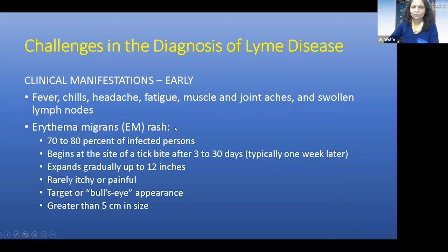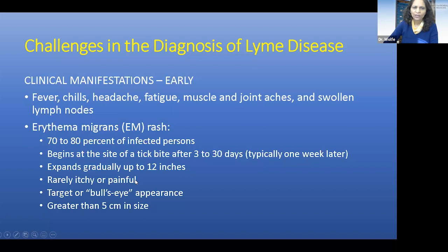Erythema migrans is considered pathognomonic for Lyme disease. However, I want to point out some exceptions. Not everybody who has Lyme disease will have an erythema migrans rash or a rash at all. It's typically described as a target or bullseye lesion, but sometimes the rashes don't look that way. Good characteristics to keep in mind: they're usually not itchy or painful. If the lesion is less than five centimeters in size, it's not going to be related to Lyme disease — almost all Lyme rashes are greater than five centimeters. That's a very important feature.